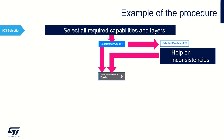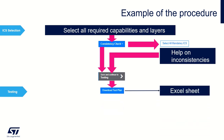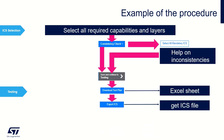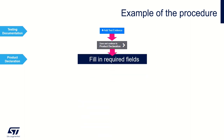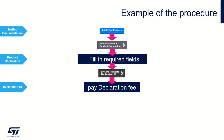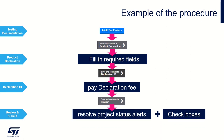When all ICS are resolved, go next by clicking Save and continue to testing. You get to the testing tab where your test plan can be downloaded. In this listing, you learn if some additional testing is necessary or if you entered incorrect data. Download your ICS by clicking Export ICS to conduct your qualification testing. In the testing documentation tab, upload all testing evidence using the Add Test Evidence button. When ready, hit Save and continue. In the product declaration tab, fill in all required fields concerning your design and version, then hit Save and continue. Pay the declaration fee and continue. On the Review tab, resolve all project status alerts, check the confirmation boxes, and finally click Signature Confirmed and Complete Project.